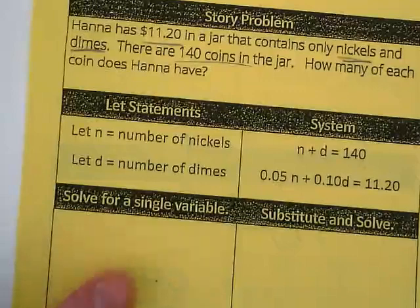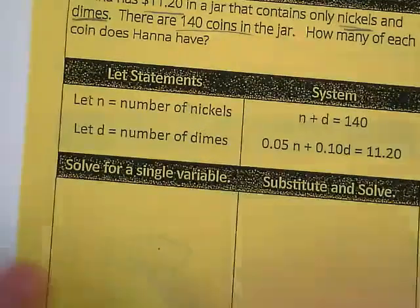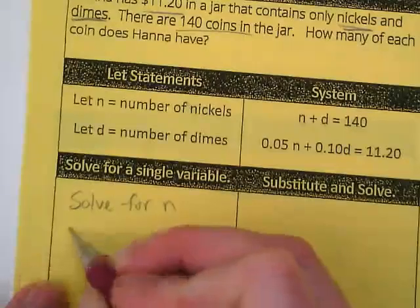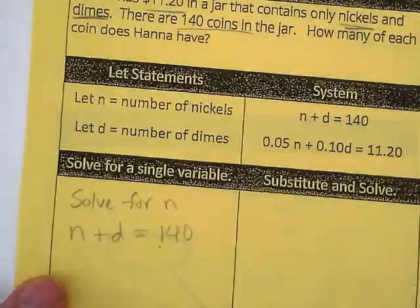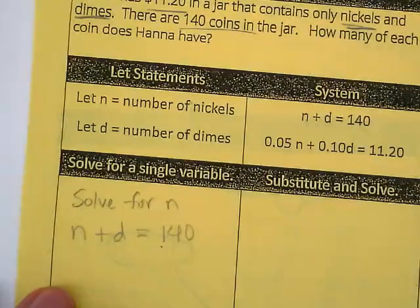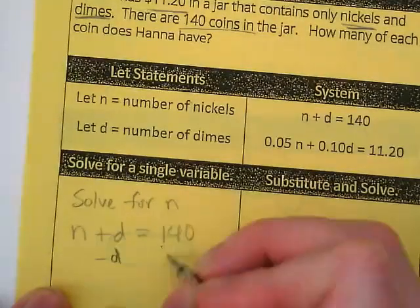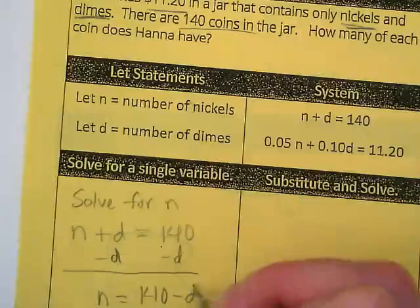So let's solve for a single variable. What do you guys want to solve for, N or D? N? Okay, let's solve for N. We're going to take the first equation, N plus D is equal to 140. Why does it make sense to start with the first equation to solve for a single variable? Do the N and the D have any crazy decimal in front of them right now? No. That makes it easier to solve for the single variable. If we're solving for N, we're going to subtract the D. And we get N is equal to 140 minus D.